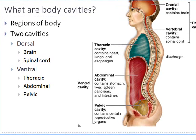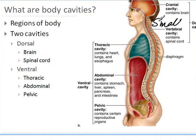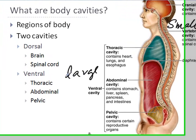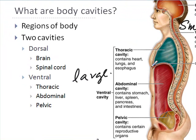The smaller one, which is shown over here, is the dorsal cavity. The large one is the ventral cavity. You can see the ventral cavity pretty much encloses everything below the diaphragm, so it is divided by the diaphragm.